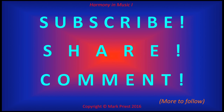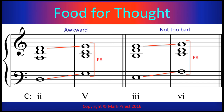Food for thought: here are two progressions in the key of C major that go against one of the principles pertaining to outer voices ascending to a hidden octave. The 2-5 progression sounds a bit awkward, but the 3-6 progression does not sound as bad. What is the reason for the difference? Think about it. Thank you for watching.